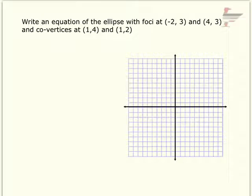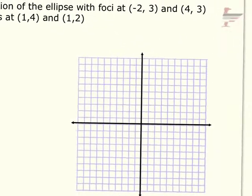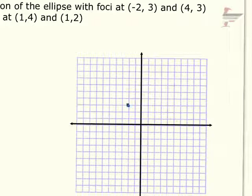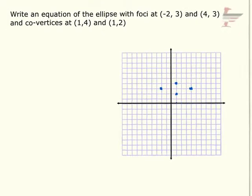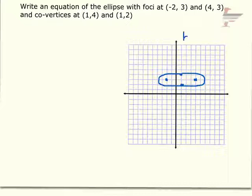Now, write an equation of the ellipse with foci at (−2, 3) and (4, 3), and co-vertices at (1, 4) and (1, 2). Graphing is optional but helpful. The co-vertices are at (1, 4) and (1, 2), so the ellipse is stretched in the x direction — it's a horizontal ellipse. I know it's not centered at the origin.